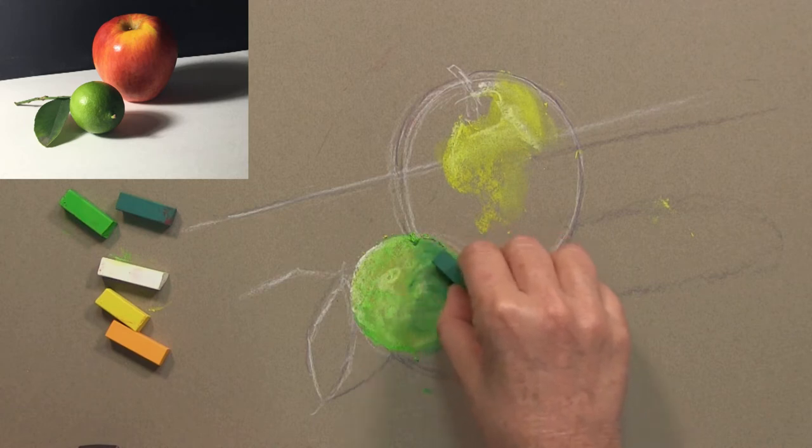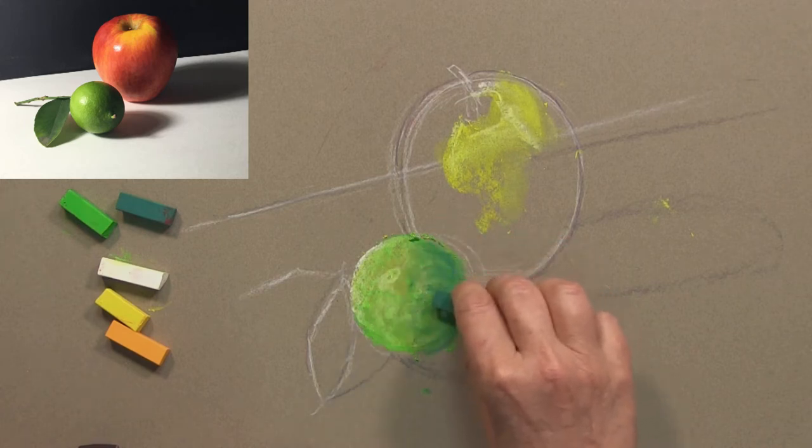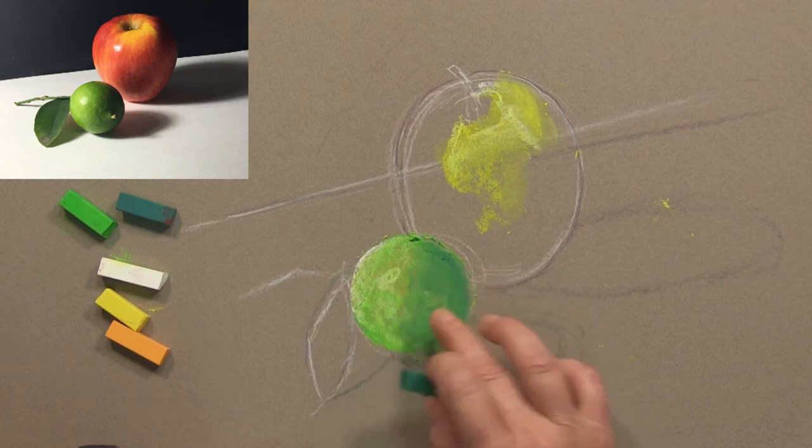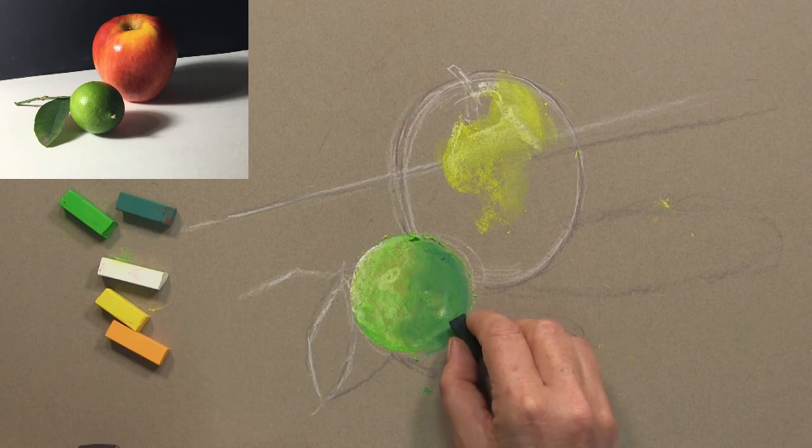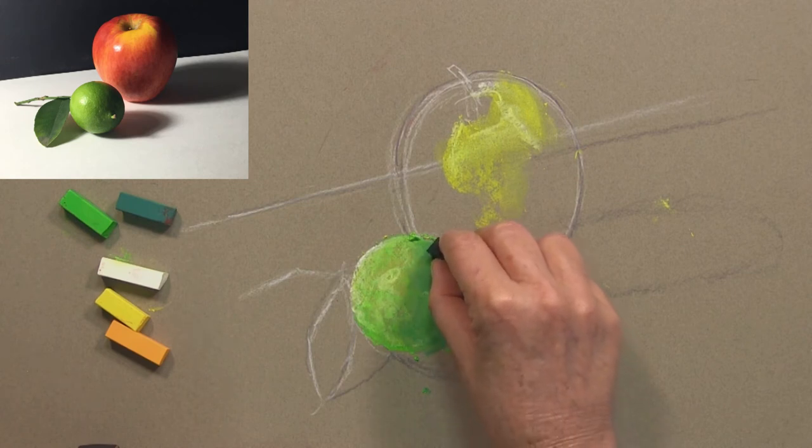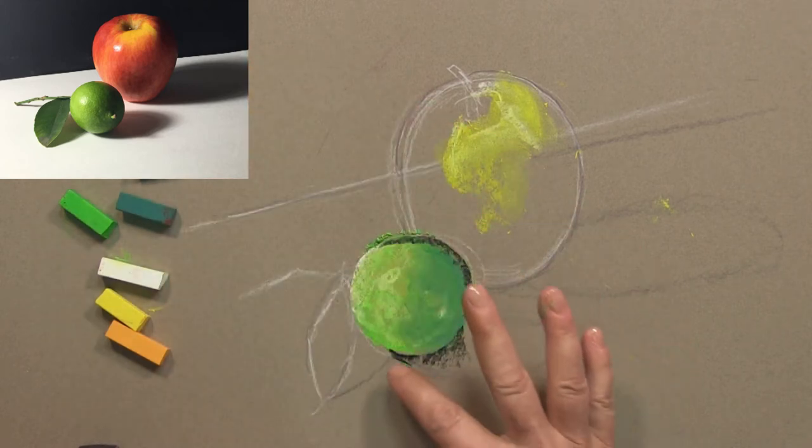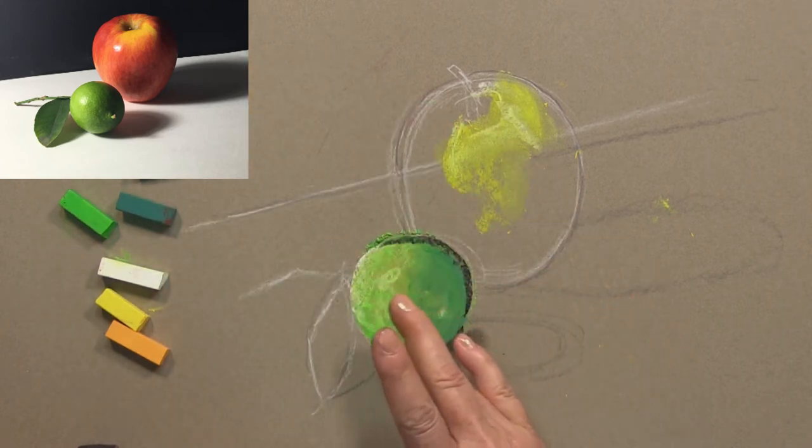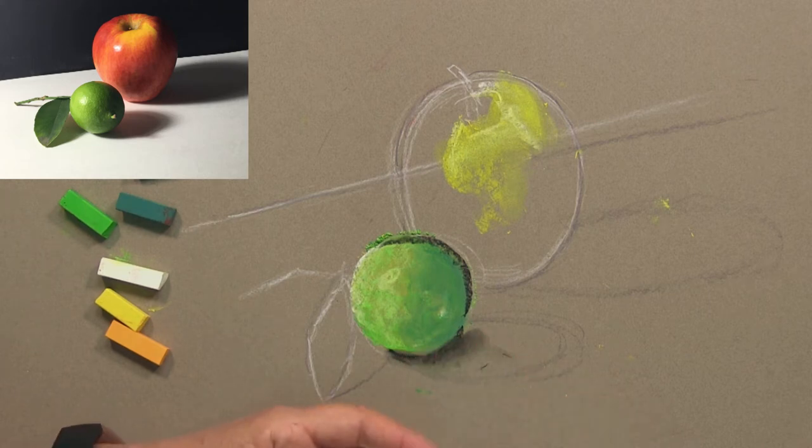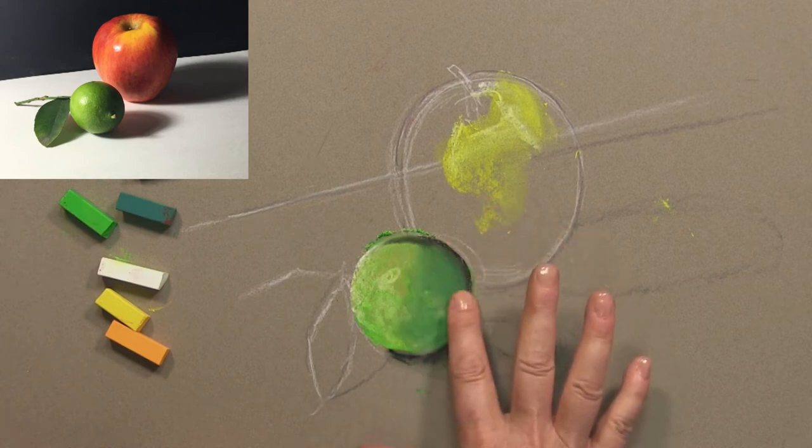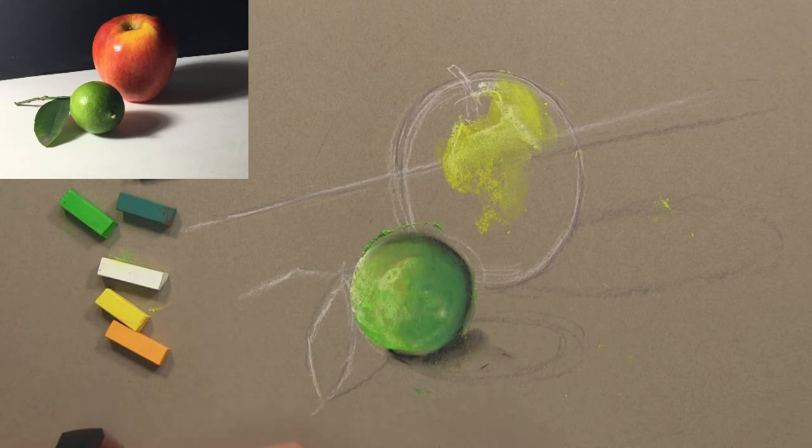The lime also has a lot of stippled texture on it, like all citrus fruit does, so I don't want to blend in the colors too much. I want to try to maintain that texture. So whatever pictures of fruit that you guys are doing, check out the texture and try to figure out how you're going to show it in your drawing. I'm going in with a little bit of black there. I put too much down, but that's okay.